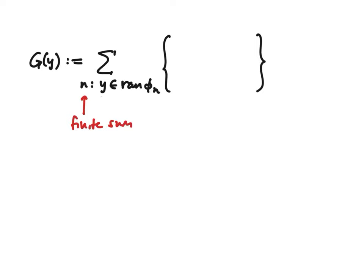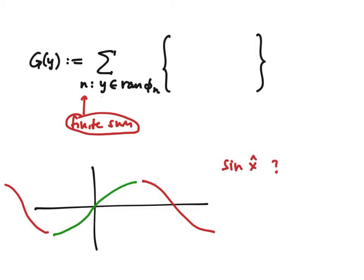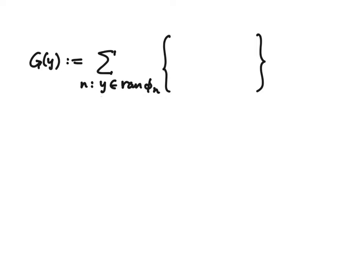A couple of comments: this is always a finite sum because there are only finitely many pieces (capital N + 1 of them). That's the reason for restricting to finitely many intervals. A function like sine would require infinitely many intervals, leading to a series whose convergence is a difficult problem. So x-hat squared is fine, but functions requiring infinitely many intervals are beyond our current technical scope.